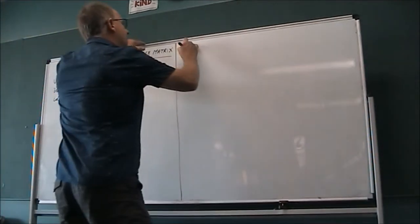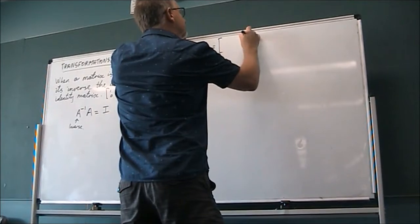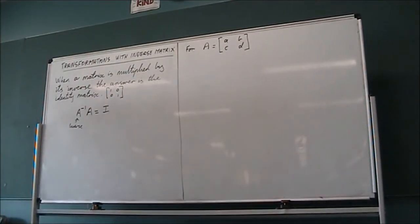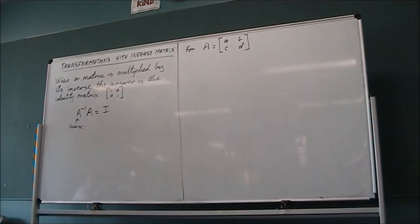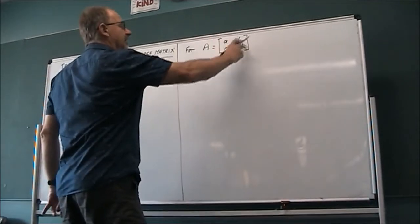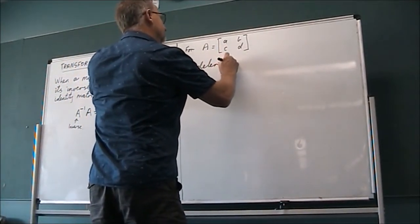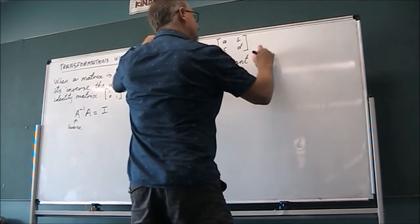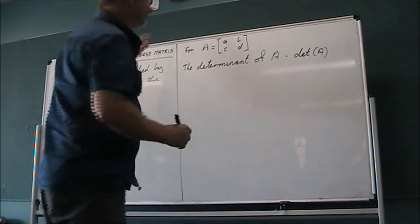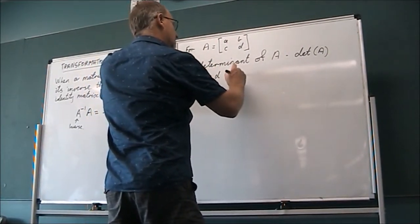Alright, so for matrix A, which is going to be a 2 by 2 matrix, it's going to have elements A, B, C, D. And to determine whether or not a matrix has an inverse, we use a thing called the determinant, because it determines that. And it's a combination of these inside. So the determinant of A, which we would write as det A, is AD minus BC.